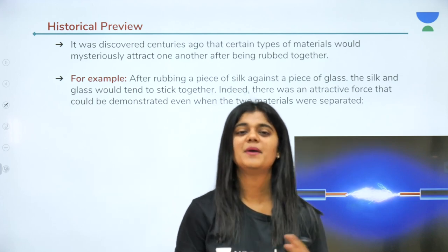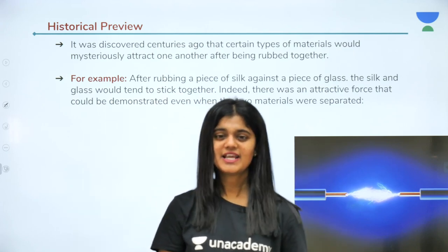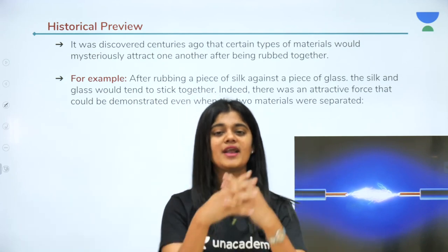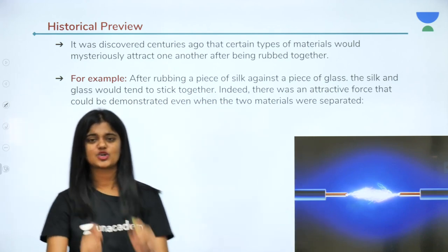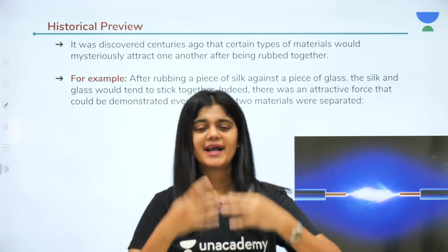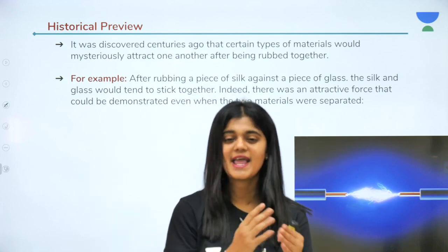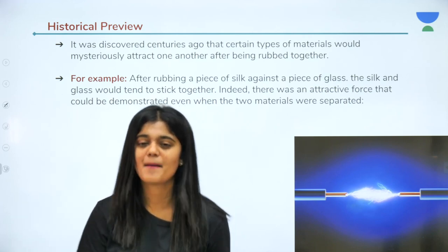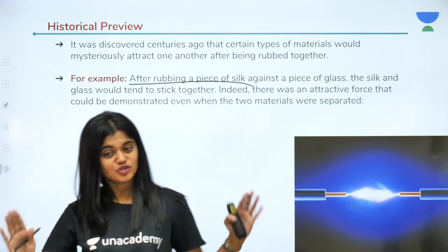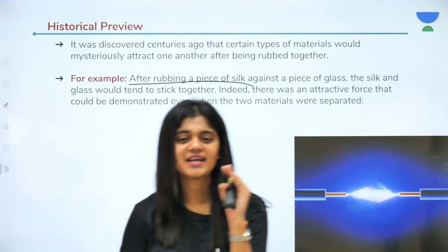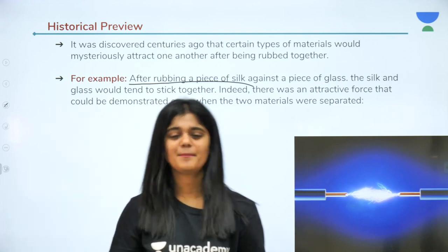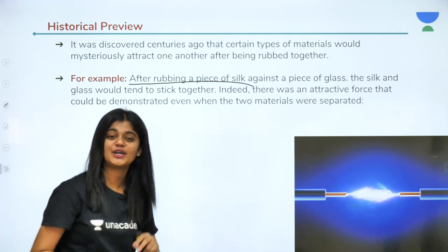It started centuries ago. They found certain types of materials which would attract one another after being rubbed together. If you rubbed two objects, it was surprisingly found that they attracted each other — similar to magnets. When two materials were rubbed, they attracted one another. For example, a piece of silk rubbed against a piece of glass — when you rub both, the silk and glass stick together. There was an attractive force between them.